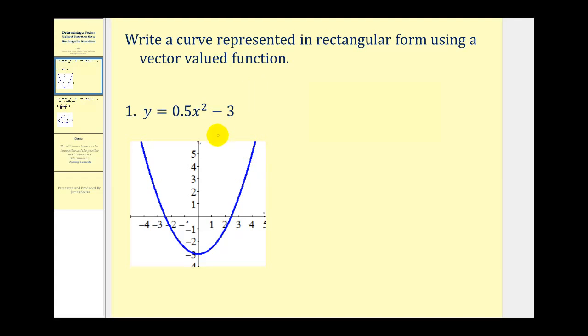The way we do this is express this as a set of parametric equations and then set it up as a vector-valued function. For example, on this equation, if we let x equal t, we can perform substitution here for x and replace it with t. So we can say that y is equal to 0.5t squared minus 3.